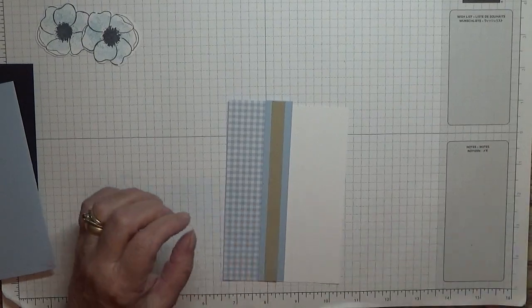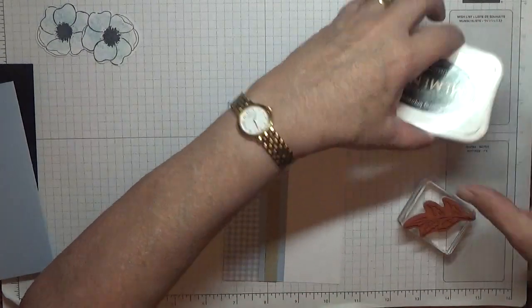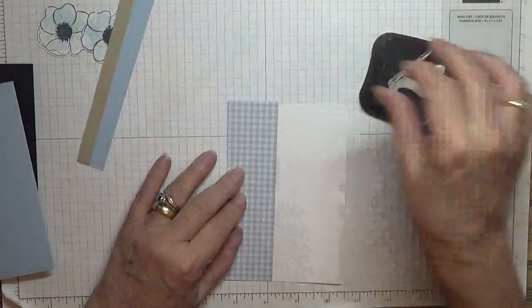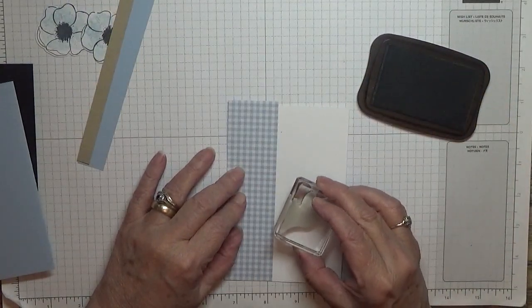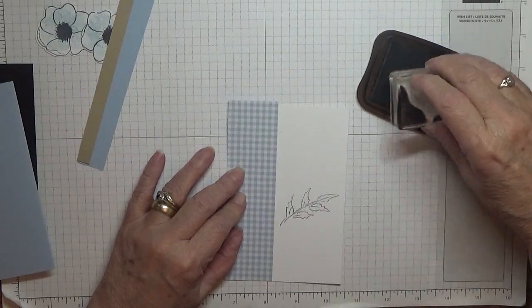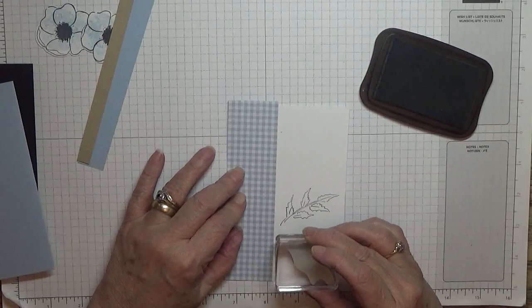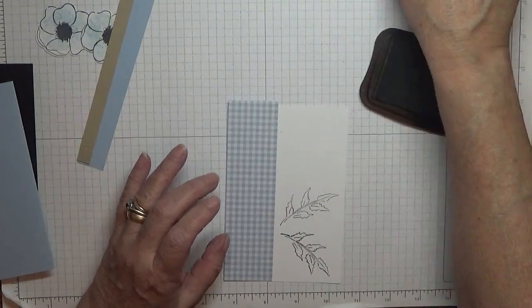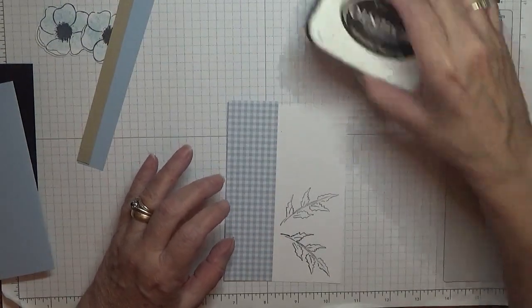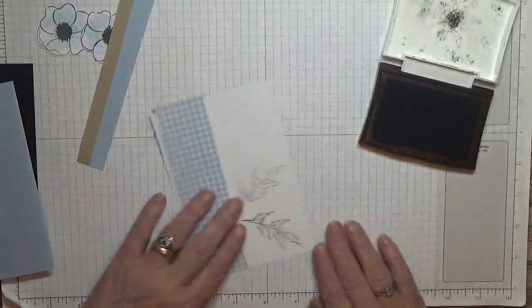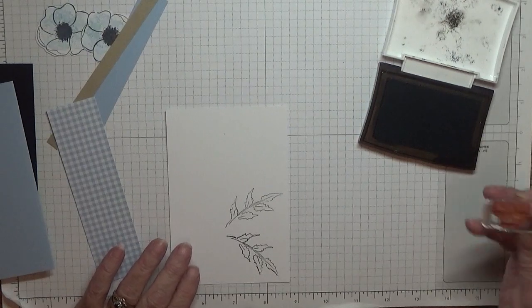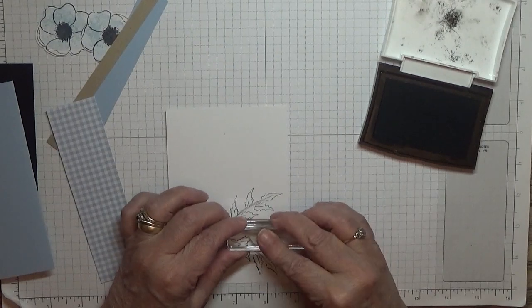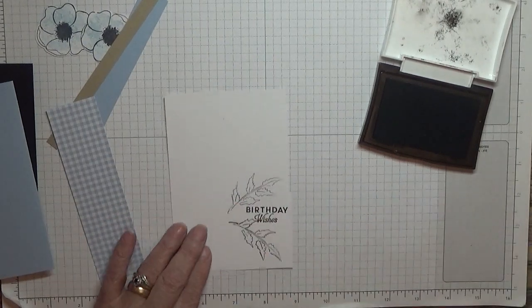So I'm just going to leave that there, and I'm going to bring in my leaves and I'm going to stamp—I'm going to take that off. I'm going to stamp my leaves, and I'm going to stamp one there and one down there like that. And then with my Versafine, I'm going to bring in Birthday Wishes and I'm going to stamp that in the middle, just there. Birthday Wishes.